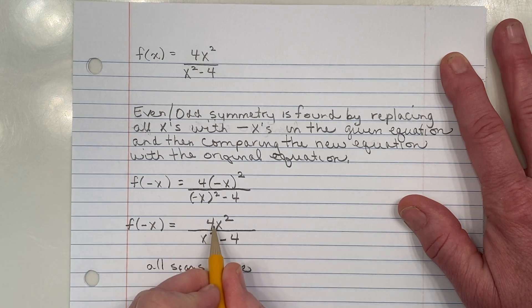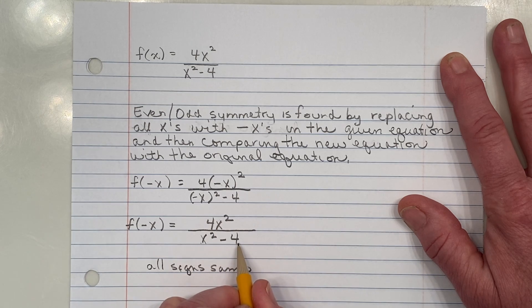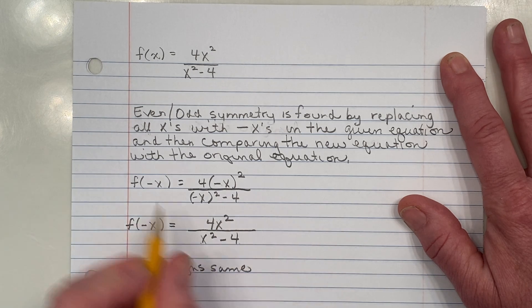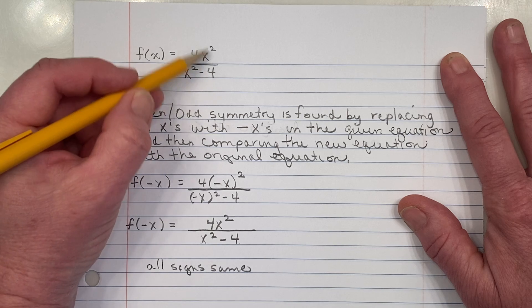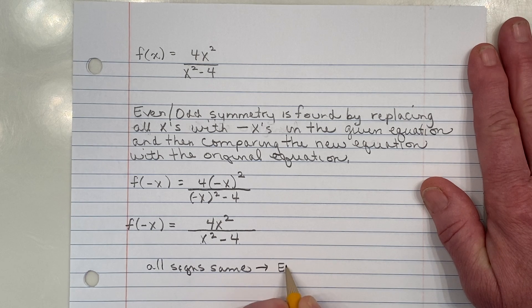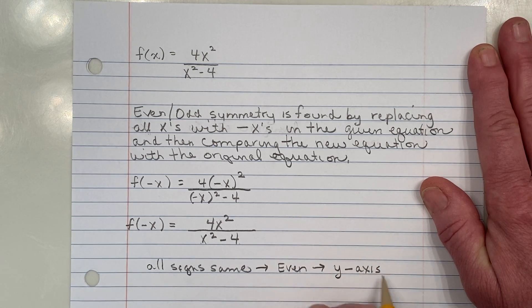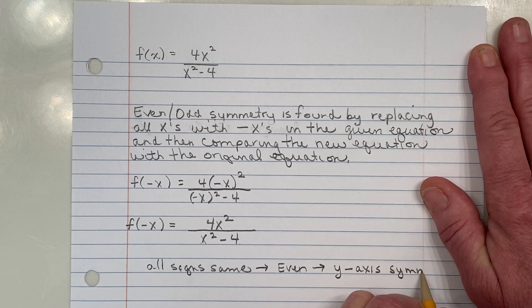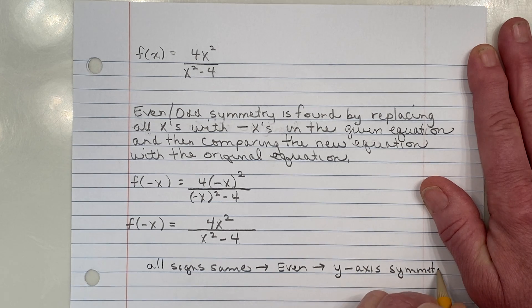So what we did in the video about symmetry is that we said all signs the same. When I say all signs the same, I mean look at every part of this new cleaned up answer. And it looks identical to the original. So all signs the same mean that we have an even function, which that also just means y-axis symmetry. So for this problem, we would have had an even function.